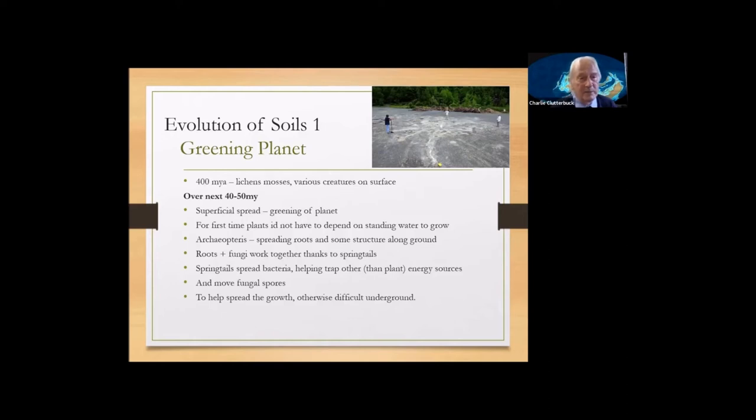So we've got at that time, we've got lichens, mosses, a few ferns and a few creatures on the surface. And that over the next 40 to 50 million years, there was this spread across the surface of the soil. There was a greening of the planet. And this thing called Archaeopteris, this sort of plant, a sort of very primitive plant, as we would call it today, was growing quite widely. And that picture there shows the roots of one of these plants. And you can see they're growing over the surface. They're not growing down, they're growing over the surface. And I think that was the time when roots started spreading across the surface of the soil.